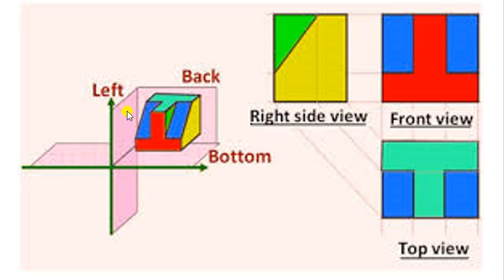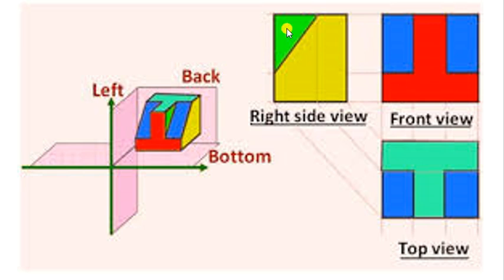If we are getting a right side view on the left plane, we rotate this plane in the clockwise direction. So we get the right side view on exactly the left side of the front view. Towards the left of the front view there will be the right side view.